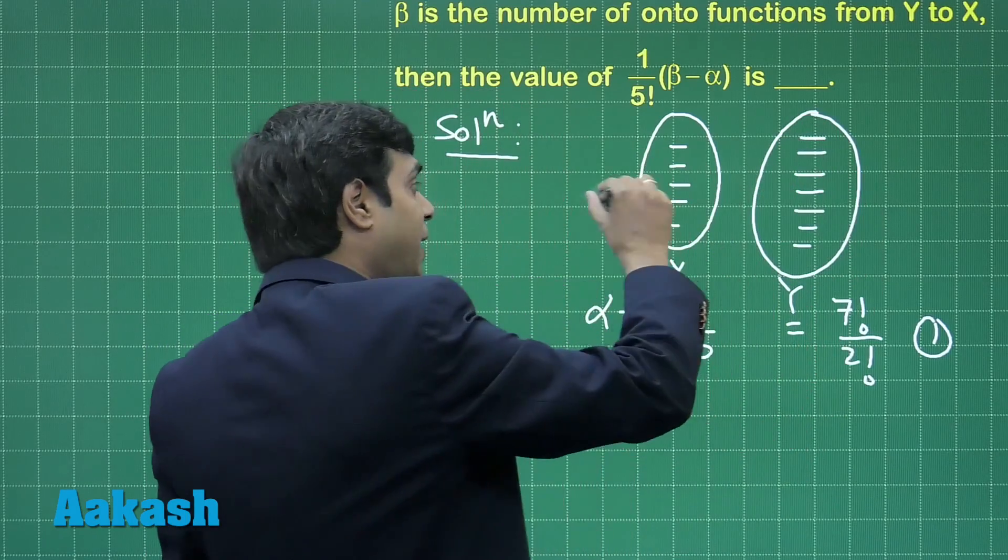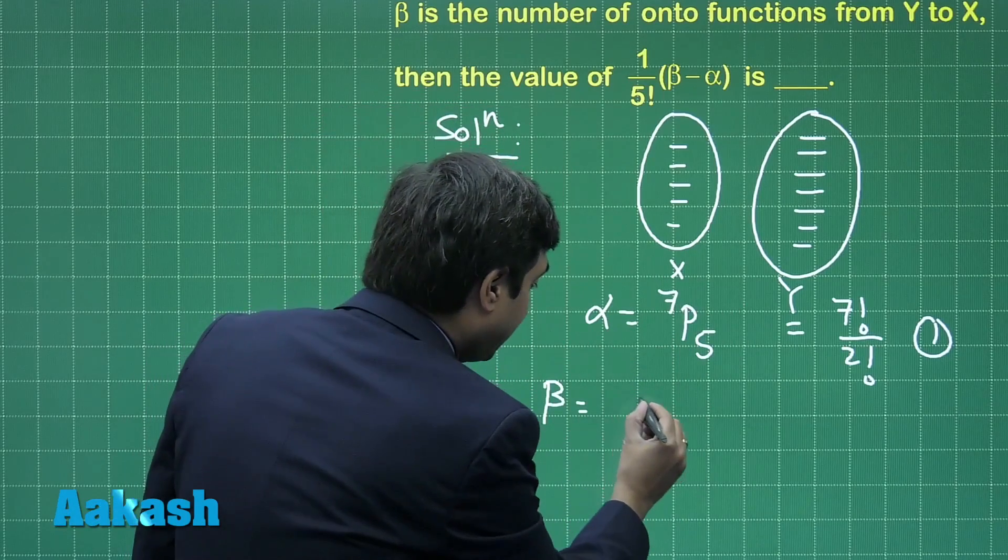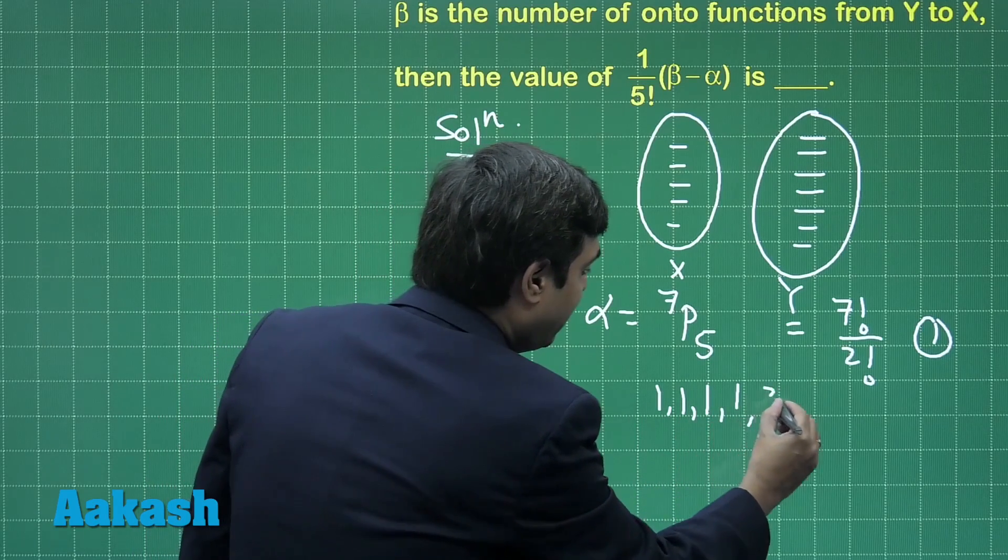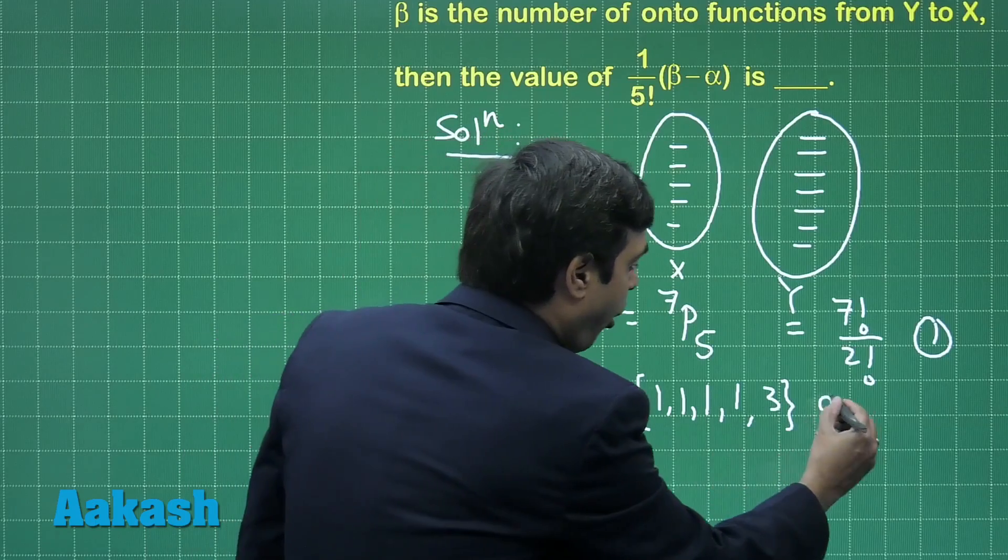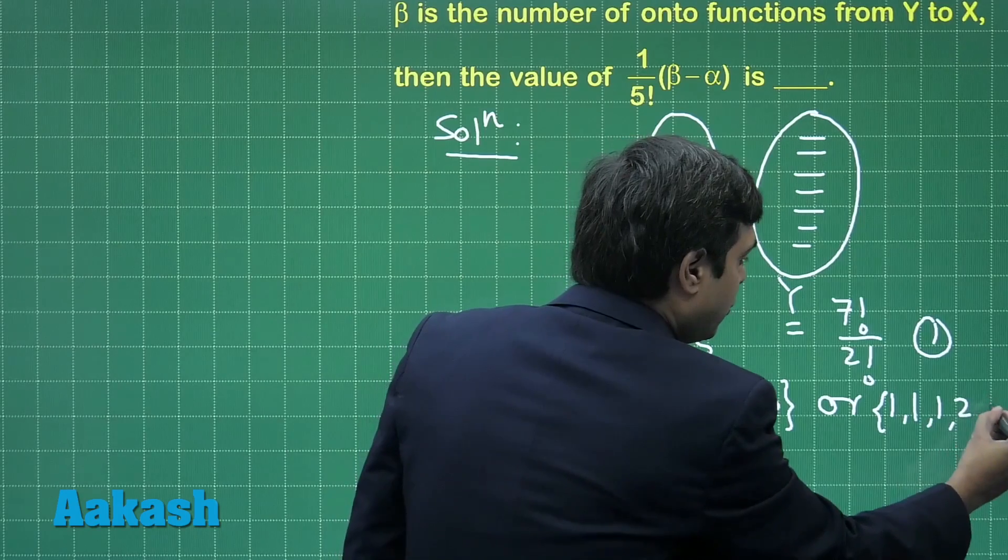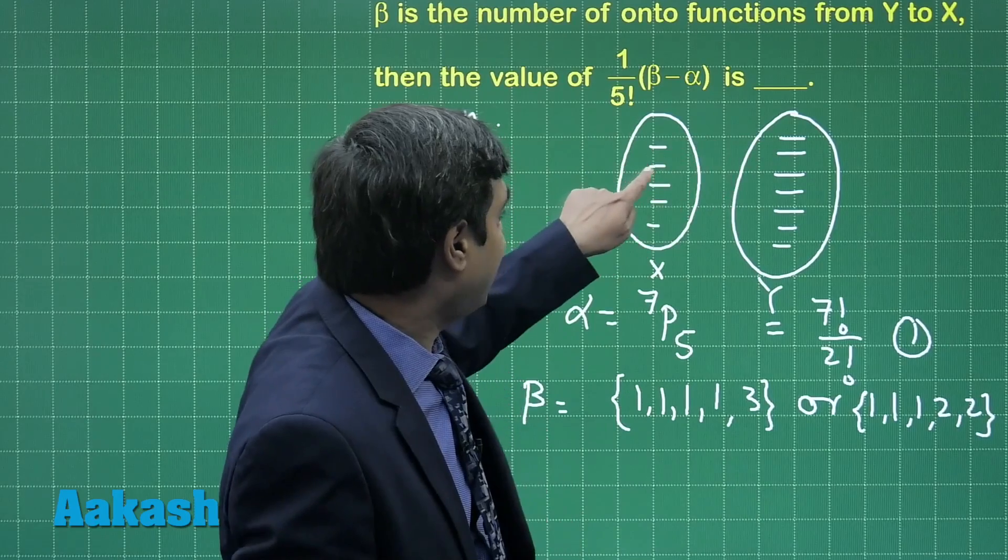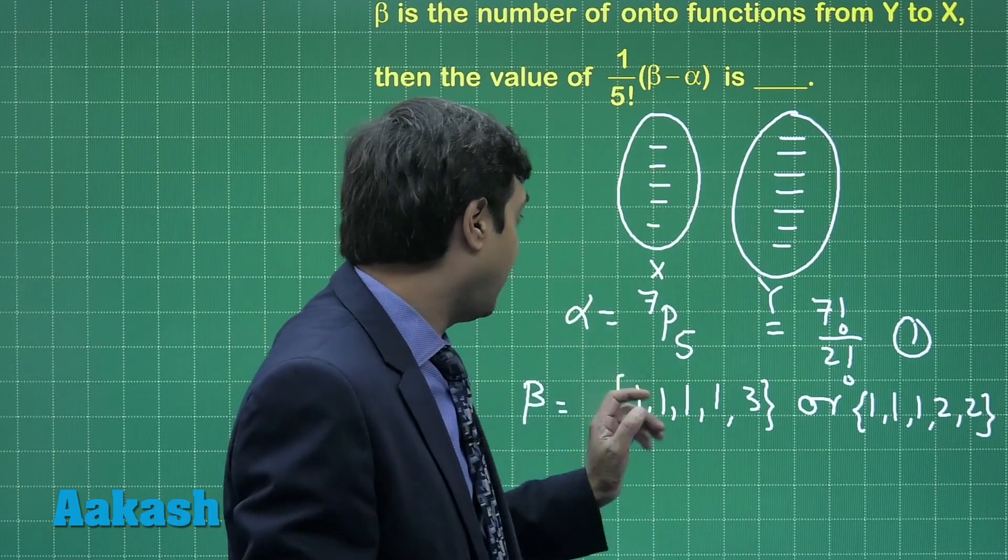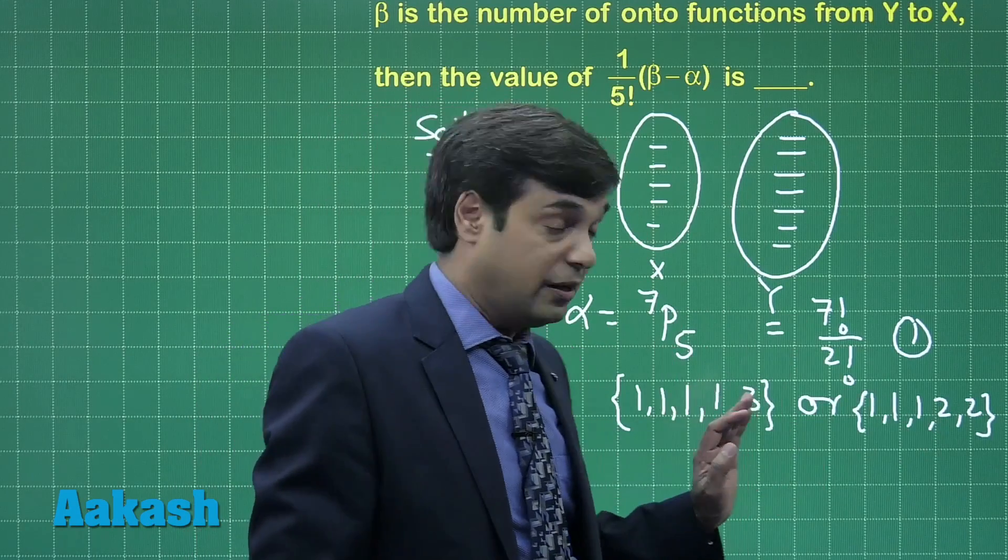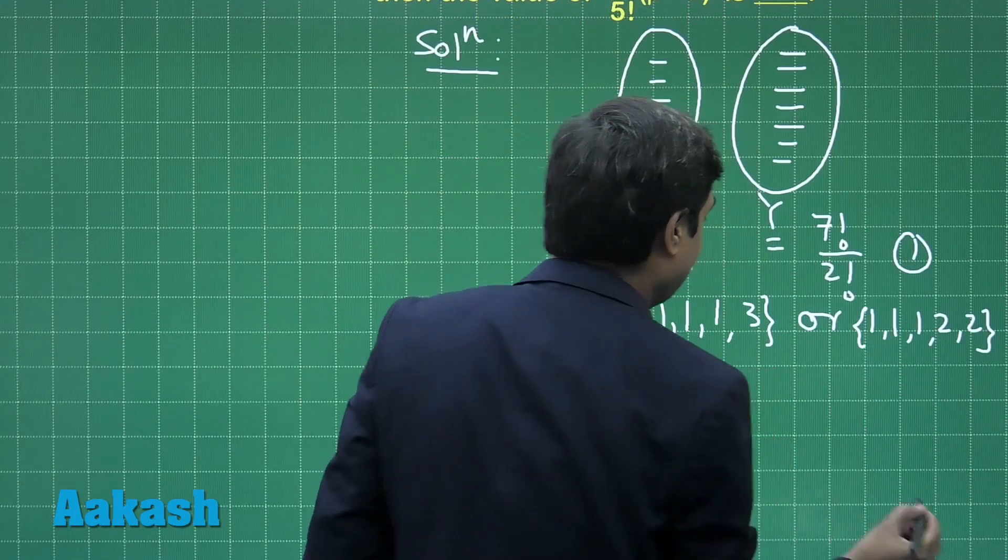These 7 elements have to be associated with 5 such that no element is left alone. We can put it like 1, 1, 1, 1, 3 for one possibility or 1, 1, 1, 2, 2, meaning the fifth is associated with rest of the 3 elements or two elements get 2 each.